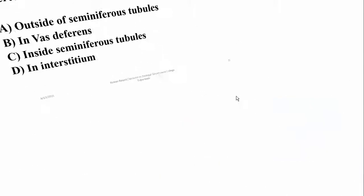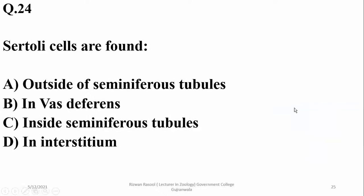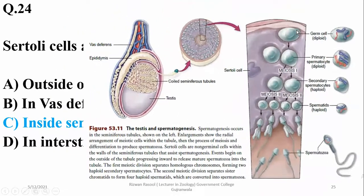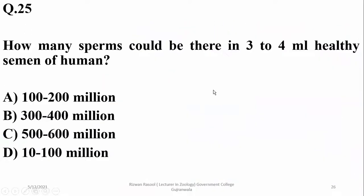Question number twenty-four: circular cells are found inside seminiferous tubules, as you can see in this cross-section of seminiferous tubules which shows circular cells. Interstitial cells, or Leydig cells, are found outside the seminiferous tubules. Question number twenty-five: in 3 to 4 ml of healthy semen in humans, there could be 300 to 400 million sperms.